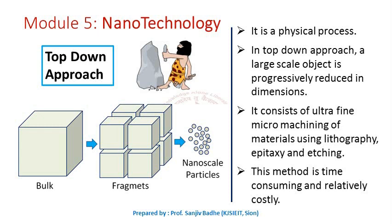For producing nanomaterials, two approaches are used. One is the top-down approach, which is a physical process where a large-scale object is continuously reduced in size. A large-scale object is progressively reduced in dimensions — like breaking a bigger rock into smaller and smaller particles. This consists of ultra-fine micromachining of materials using lithography, epitaxy, or etching. It is usually a time-consuming and relatively costly method.